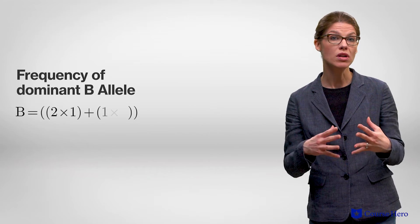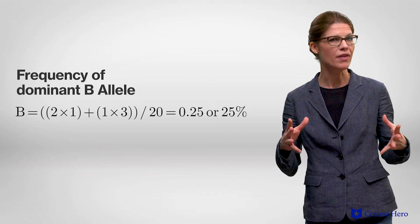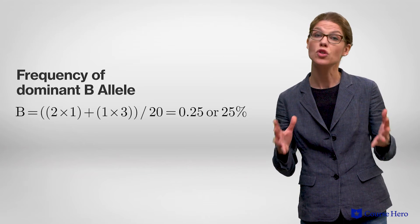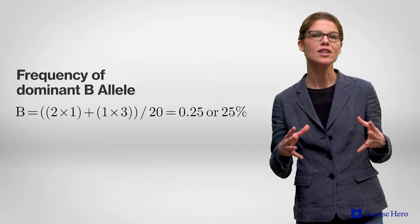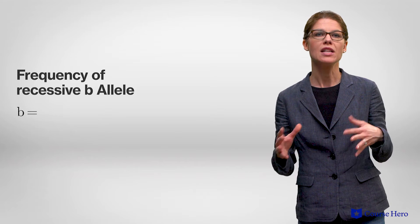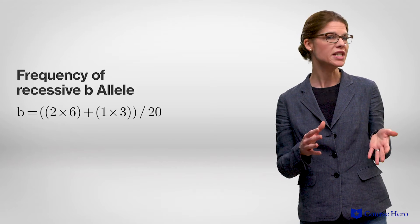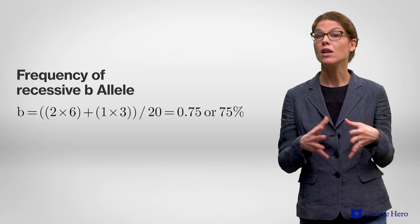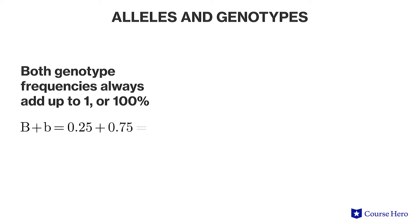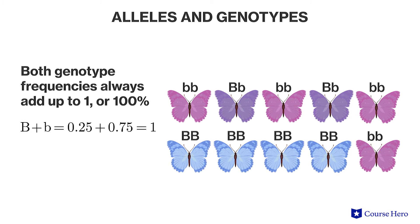To calculate the allele frequencies, you need to look at the individual B alleles. The frequency of the dominant B allele would be calculated by summing the total number of dominant Bs in the population — so 5 — divided by the total number of alleles, 20. This gives you a frequency of 0.25. The same logic applies for the recessive b alleles, and so the frequency of the recessive b would be 15 divided by 20, which is 0.75. Note that both the genotype and allele frequencies always add up to 1, or 100%, because they are proportions of the whole population.